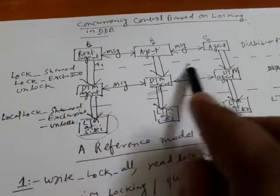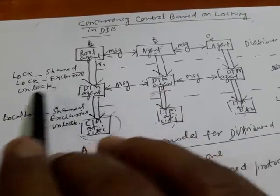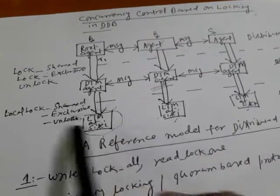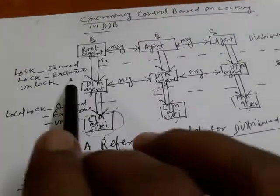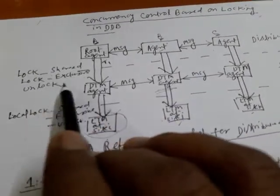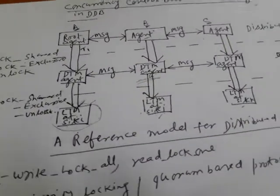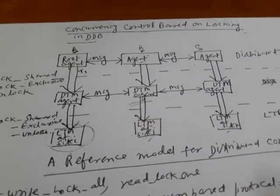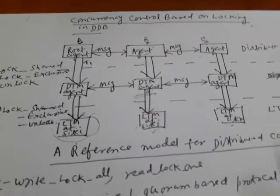Looking at the figure, interface level 2 allows local share, local exclusive, and local unlock. The higher-level interface allows global share, global exclusive, and global unlock. It is very hard to deal with a situation where one place data is updated and another is not. Concurrency means the same item can be accessed by more than one transaction at the same time.